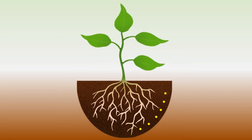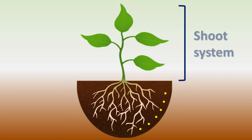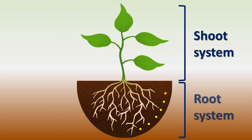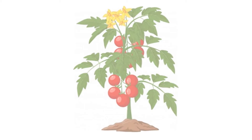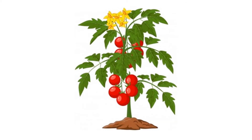Plants are divided into two systems: one is the shoot system and another is the root system. The part of the plant that is seen above the ground surface is called the shoot system. The part of the plant that is seen below the soil surface is called the root system.